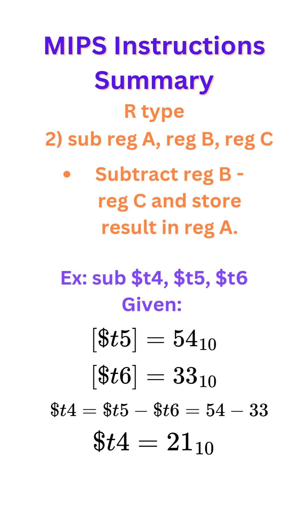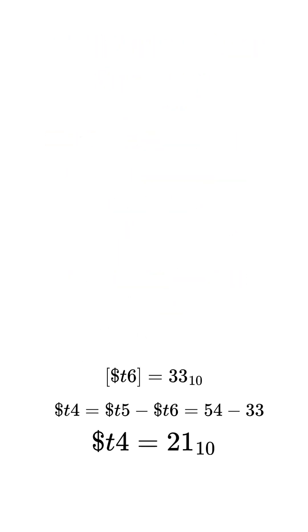Example: sub T4, T5, T6. We're given the contents of T5 and T6, so in T4 we would do T5 minus T6, which is 54 minus 33, to give us 21, which would be stored in register T4.